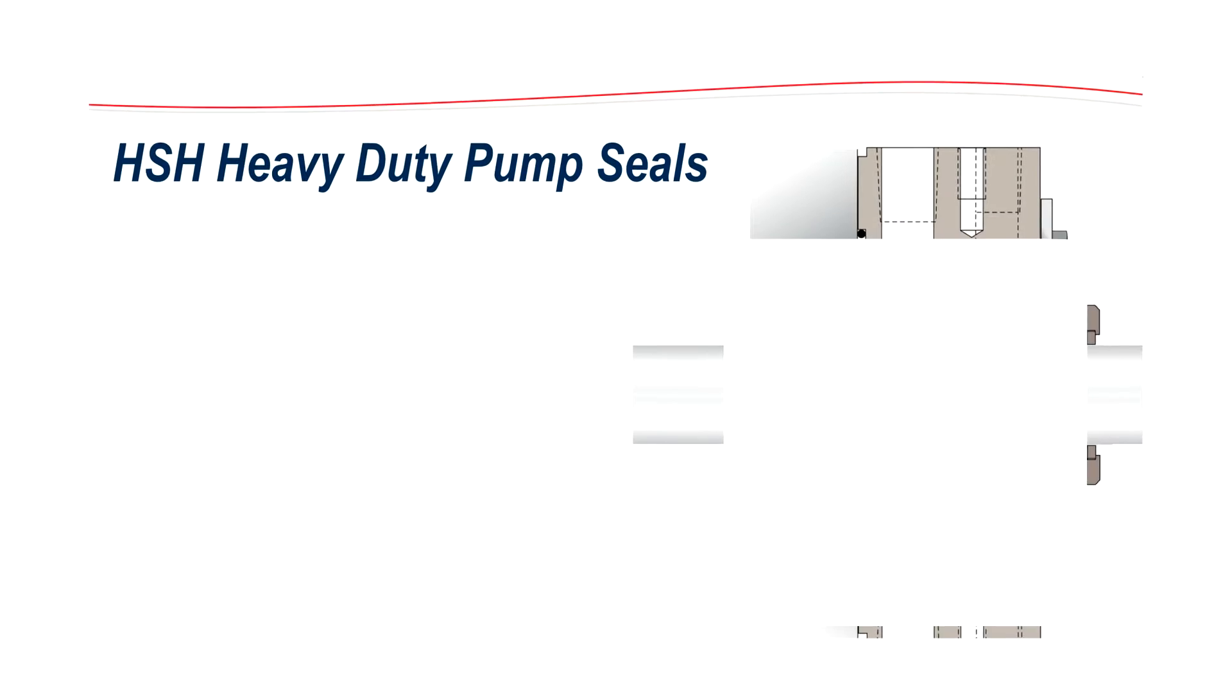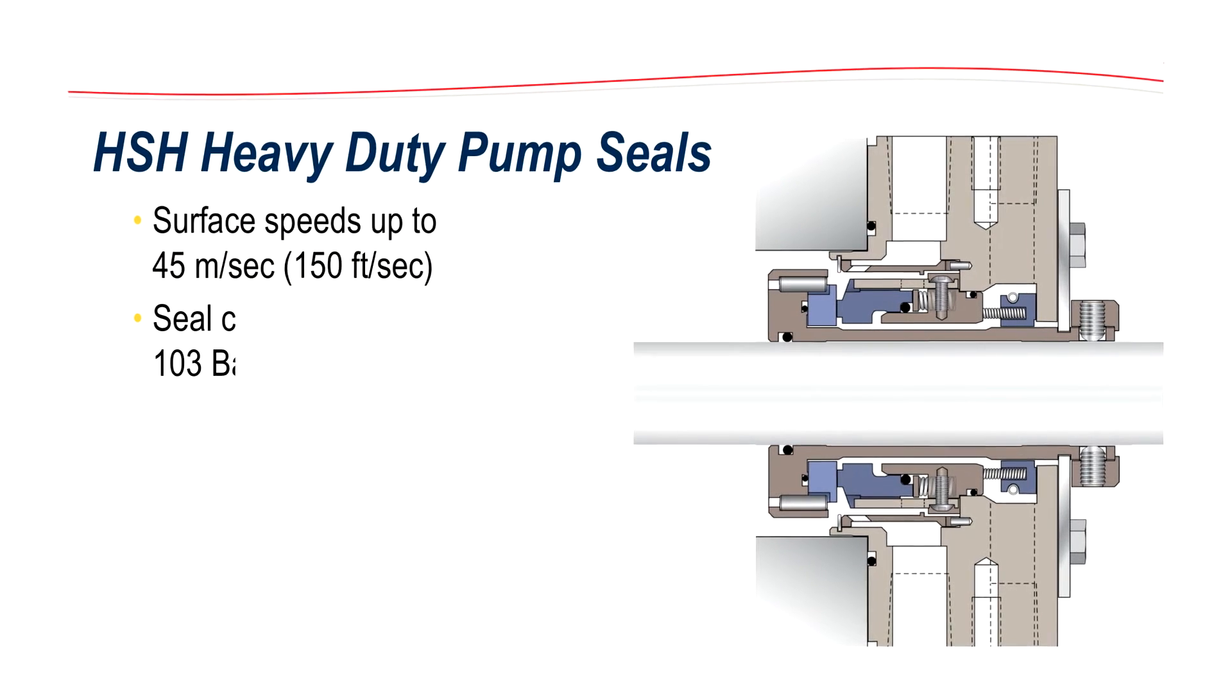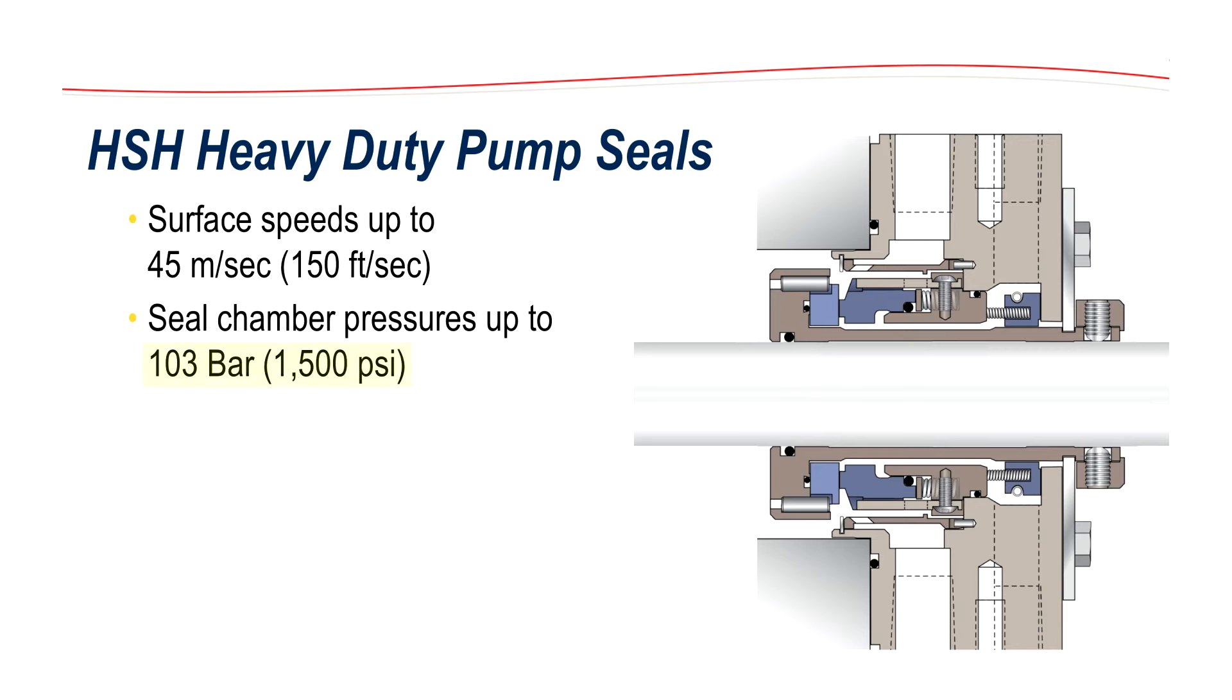HSH seals utilize high-speed and high-pressure features for dynamic applications up to 45 meters per second, 150 feet per second, and 103 bar, 1500 PSI.